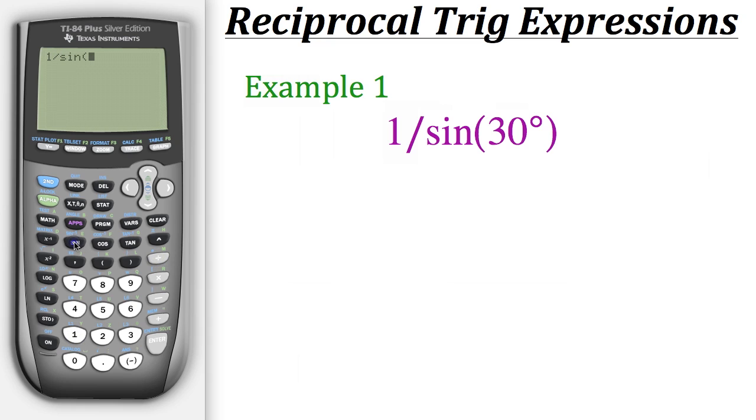Before you hit enter, make sure that you're in degree mode. In this case we're in radians, we need to change it over to degrees. Now we hit enter and from this we can see that our result is 2, which means that cosecant of 30 degrees is also 2.